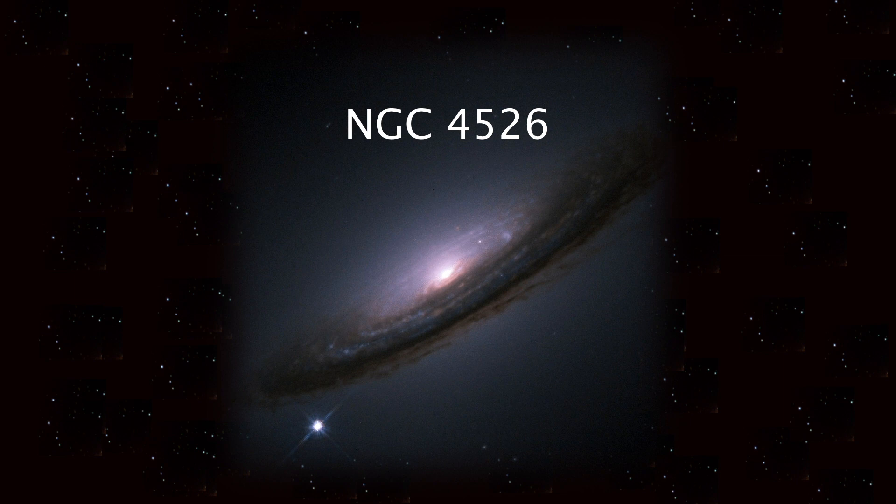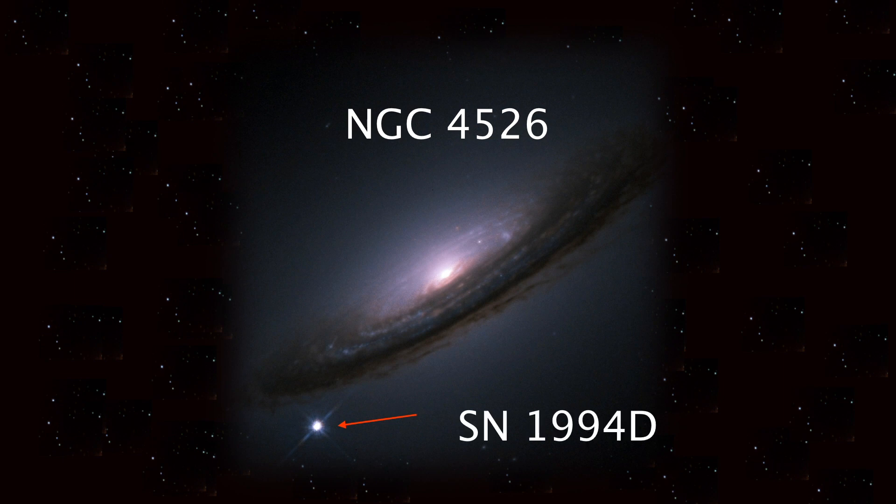Here you can see galaxy NGC 4526. It's made up of billions of stars. In the left corner you can see a really bright object, brighter than the galaxy itself. This is supernova SN 1994d, and as you can see it is powerful enough to outshine the whole galaxy.